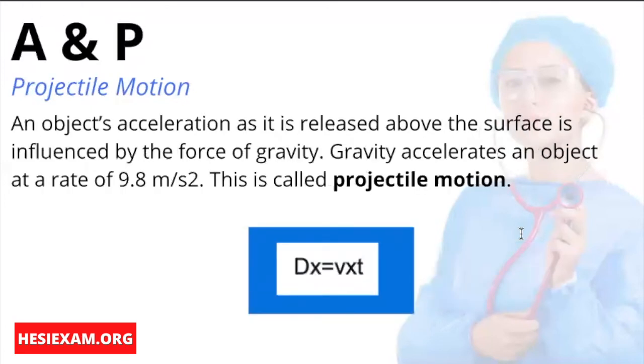An object's acceleration as it is released above the surface is influenced by the force of gravity. Gravity, without wind resistance, accelerates an object released from above the Earth's surface at the rate of 9.8 meters per second squared. An object can also display two motions at the same time. This is called projectile motion.